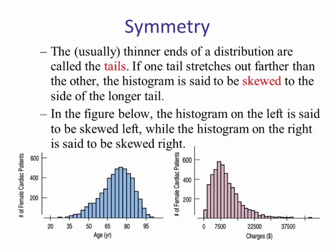The thinner ends of a distribution are what we call the tails. If one tail stretches out further than the other, then we say the distribution is skewed. We have two types: skewed left and skewed right.